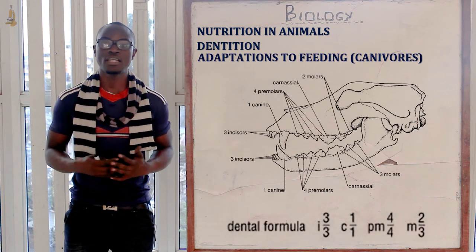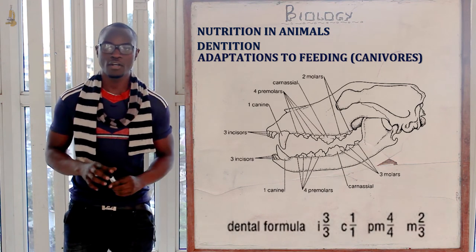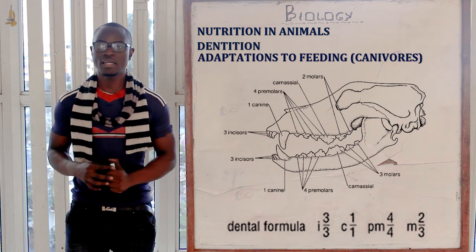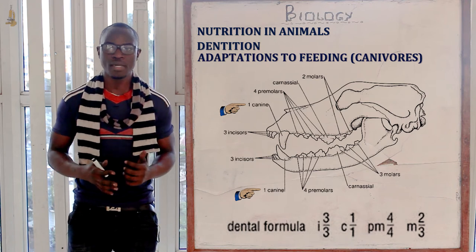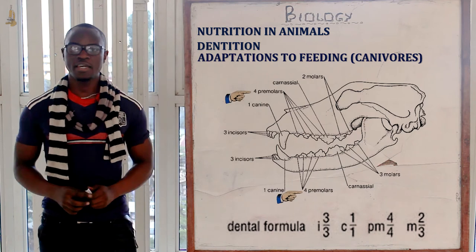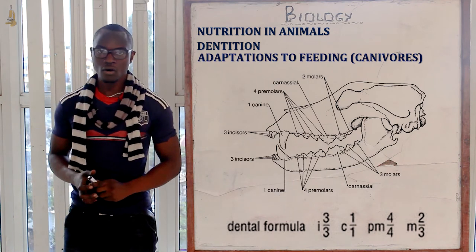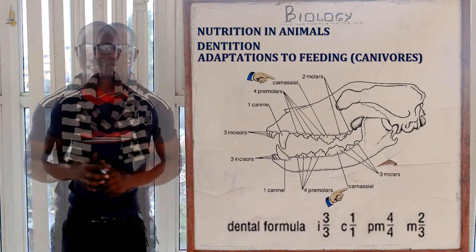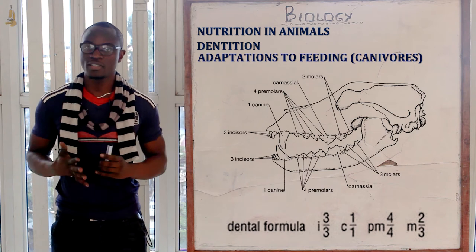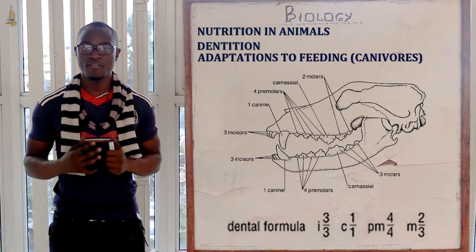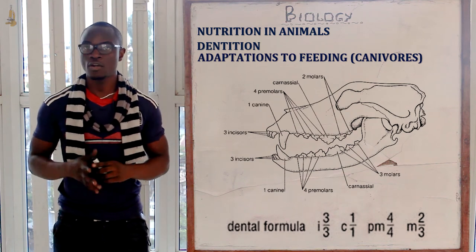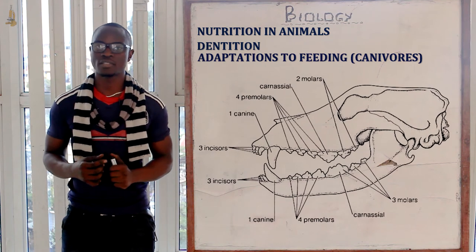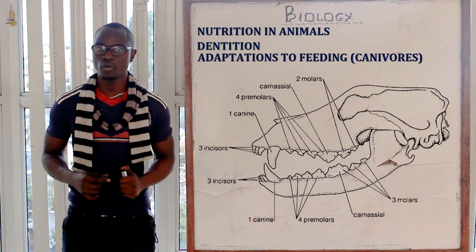Looking at adaptations of carnivores — using the dog as an example — it has very sharp incisors for biting, gripping, and stripping flesh. The canines are very long, curved, and pointed to pierce and tear flesh. The premolars and molars are long to increase surface area for crushing and grinding food. The carnassial teeth are enlarged for cutting flesh, acting as shears or scissors to strip through flesh, and are very strong to crush bones. The teeth of carnivores have closed roots and a small pulp cavity opening to allow nutrients to pass through.